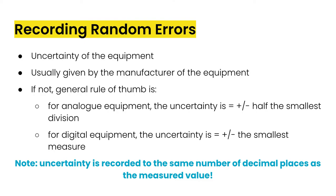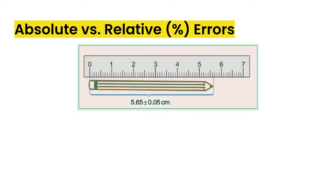The uncertainty is recorded to the same number of decimal places as your measured value. So that's something else to kind of keep in mind as you're doing your measurements as well.